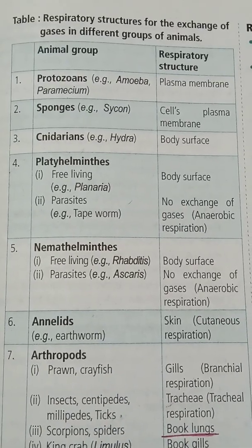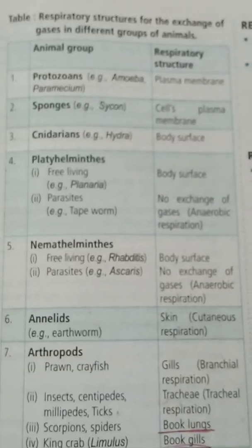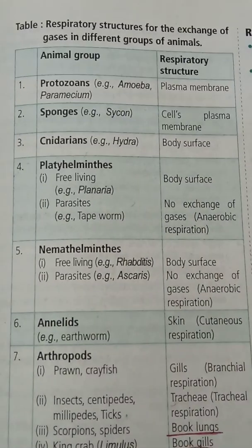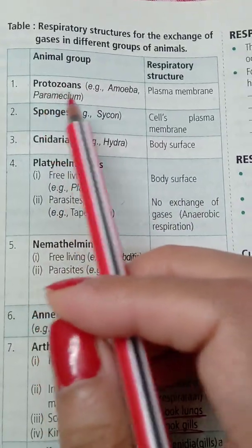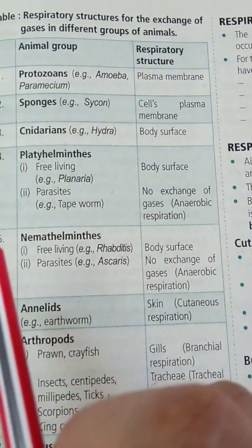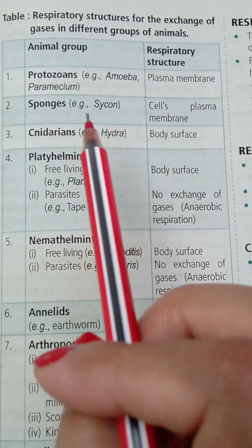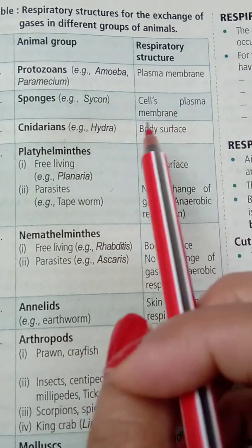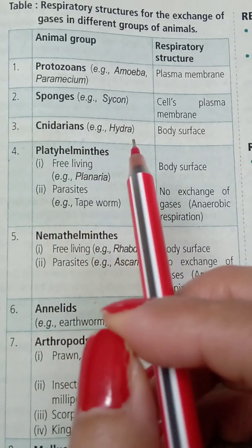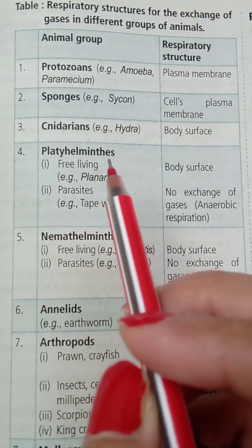Welcome to Dinner by Science. Today's topic is about respiratory structures which help in the exchange of gases in different groups of animals. The first group is Protozoa, examples being Amoeba and Paramecium, and the respiratory structure is the plasma membrane. Next is Sponges, example Sycon — also the cell's plasma membrane. Third is Cnidarians, example Hydra — the body surface is the respiratory structure.